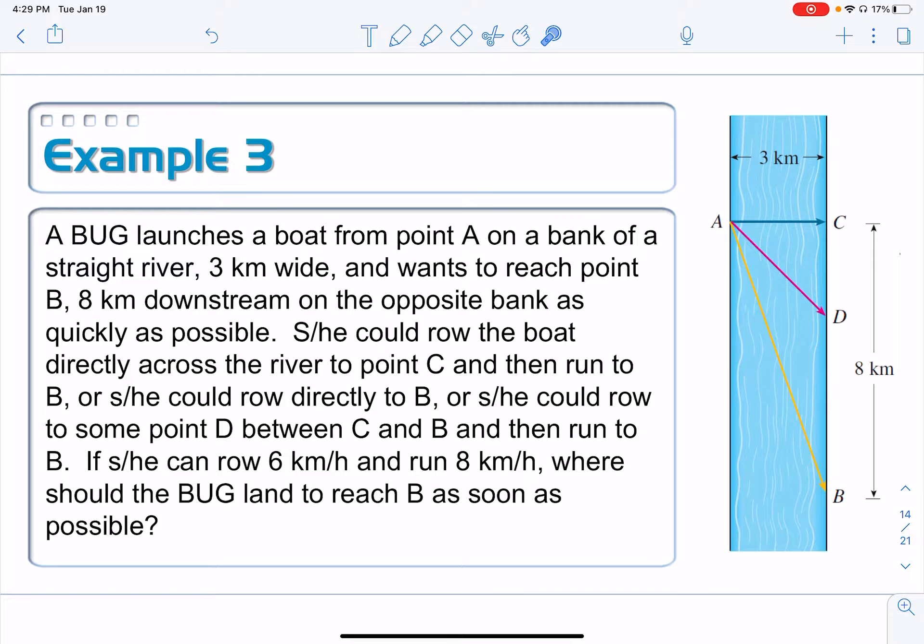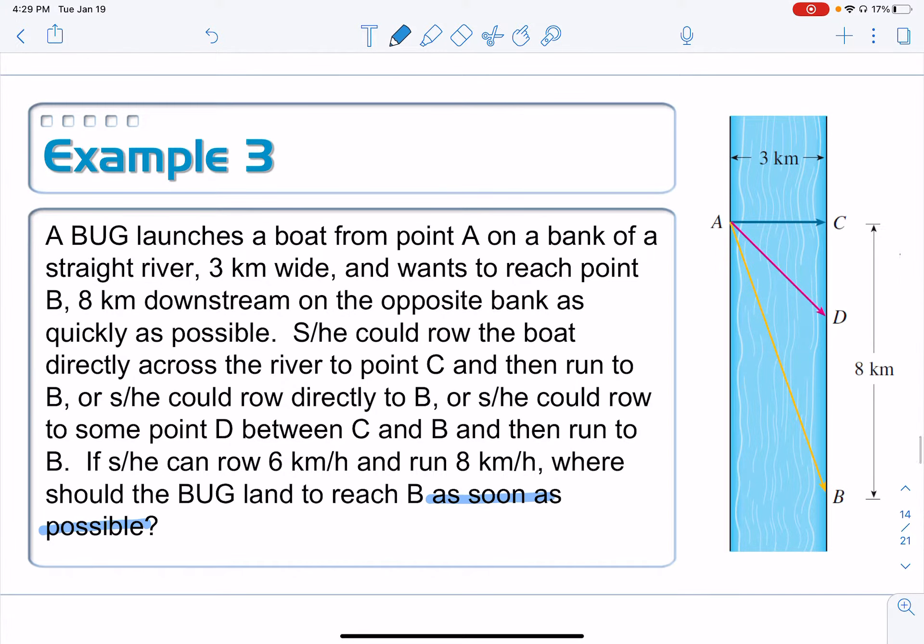If she can row six kilometers per hour and run eight kilometers per hour, where should the bug land to reach B as soon as possible? As soon as possible. What does it sound like we are trying to minimize or maximize? What are we optimizing here? We are optimizing time. As soon as possible is time, and as soon means we want the smallest time possible. So we want to minimize time.